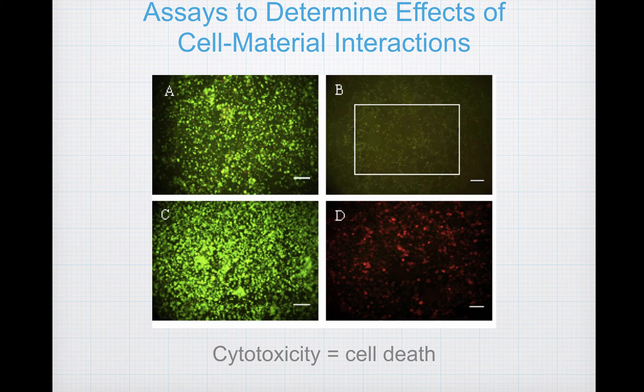By the end of this lab, you'll be able to say which of these figures — A, B, C, or D — represent healthy viable cells and which do not, although you can probably venture a guess right now.